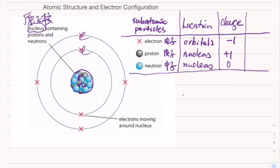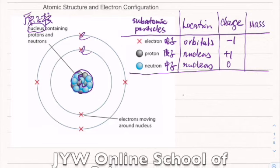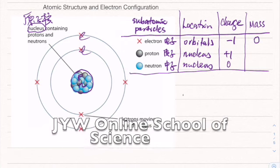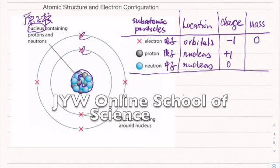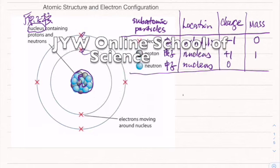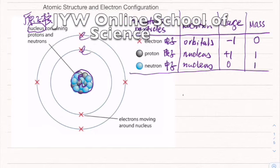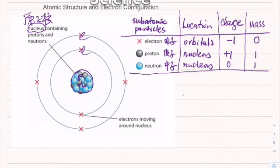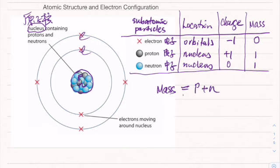Looking at the relative mass: electrons are very tiny and their mass is considered zero. Protons have a relative mass of one, and neutrons also have a relative mass of one. So the mass is really focused on the nucleus — protons and neutrons adding up give you the atomic mass.